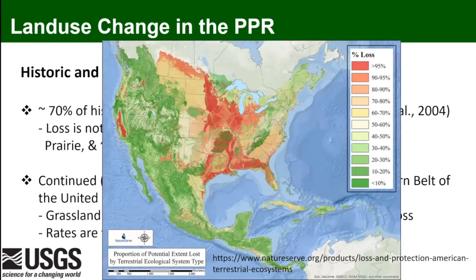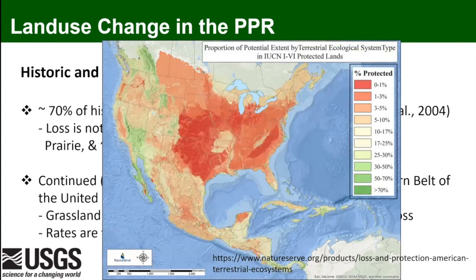Here's a map from NatureServe showing terrestrial native ecosystem loss — darker reds indicate more loss. Eastern and all of North Dakota, mostly a grassland biome, has had a majority of those natural systems converted to other uses. This also correlates with the amount of that area that is protected or in conservation programs.